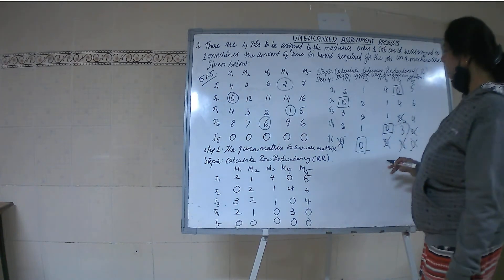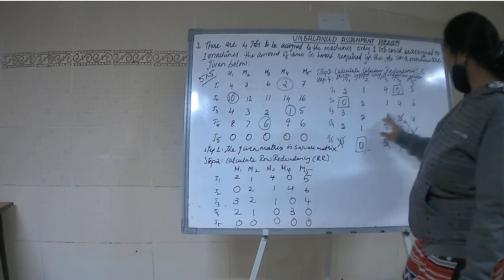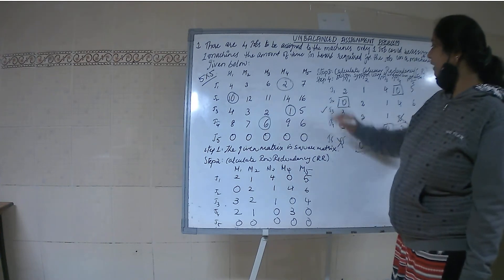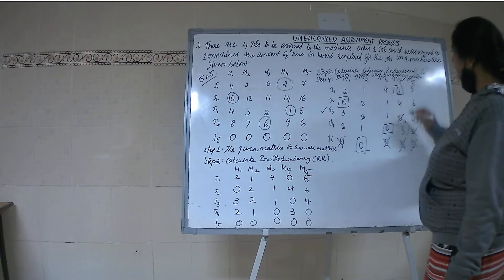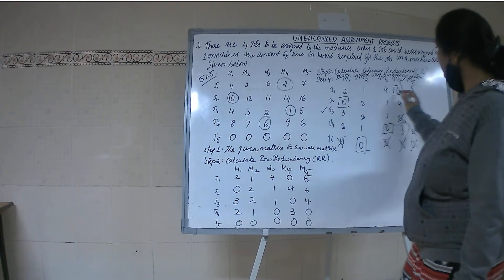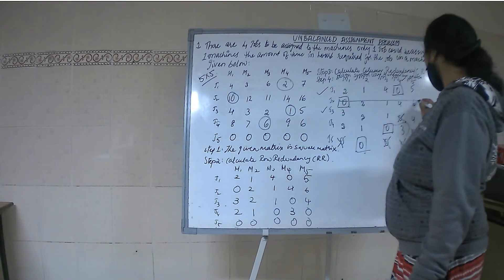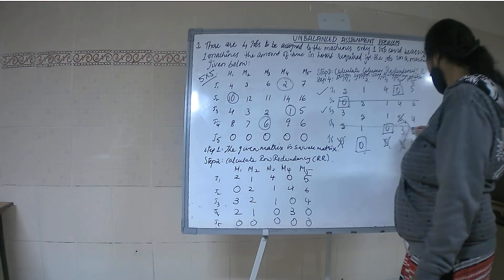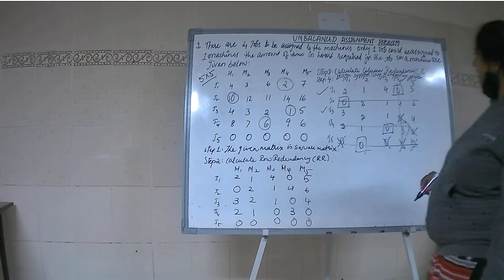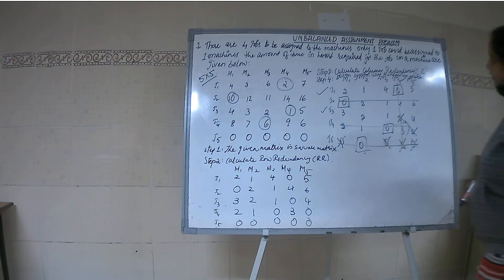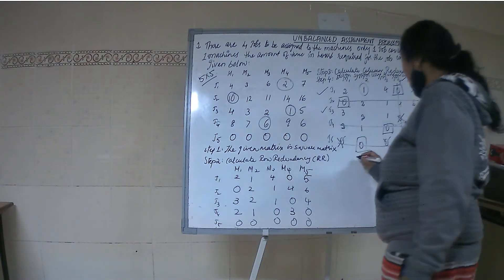You have to check where there is no assignment. That is J3, you don't have assignment. Where you have zero in this column? M4. And the assignment is in J1. So I am cancelling J2, J4, J5 and M4. Minimum value again 1.